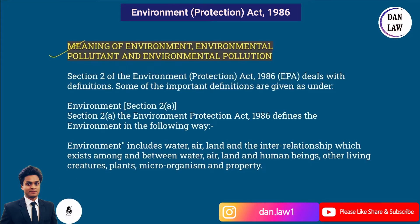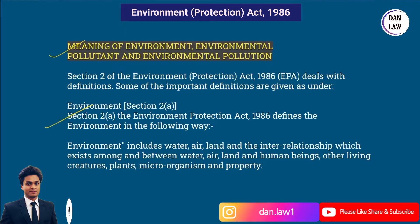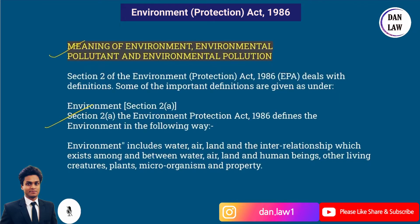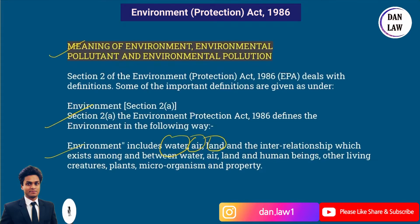Now coming to the definitions — under Section 2 of the Environment Protection Act 1986, 'environment' is defined under Section 2(a). Environment includes water, air, and land, and also the interrelationship which exists among and between water, air, land and human beings, other living creatures, plants, microorganisms, and property.